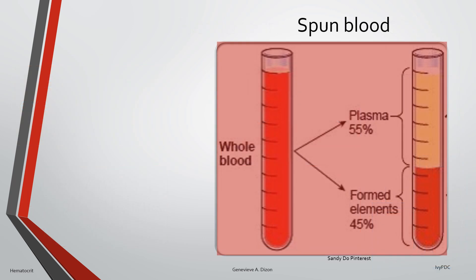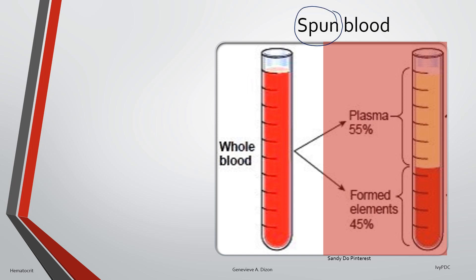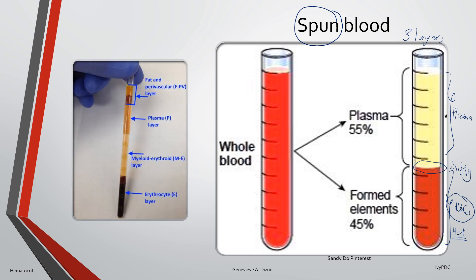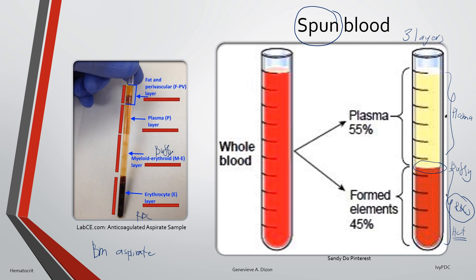The general idea for hematocrit is that when a whole blood sample is centrifuged, it is divided into three layers based on the weight of the cells. At the bottom are the formed elements or red blood cells; in the middle is the buffy coat; and on top is the liquid portion or plasma, since an anticoagulated sample is used. The red blood cells at the bottom are measured to give the hematocrit value. In a bone marrow aspirate, there is also a fourth layer on top made up mostly of fat and perivascular material.